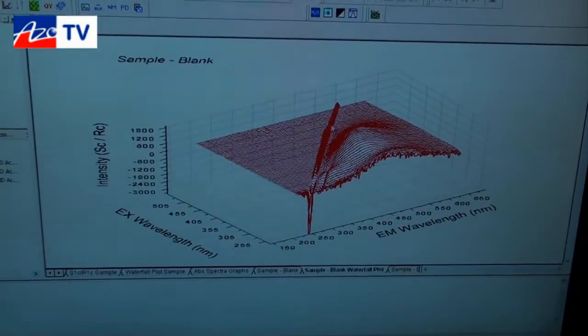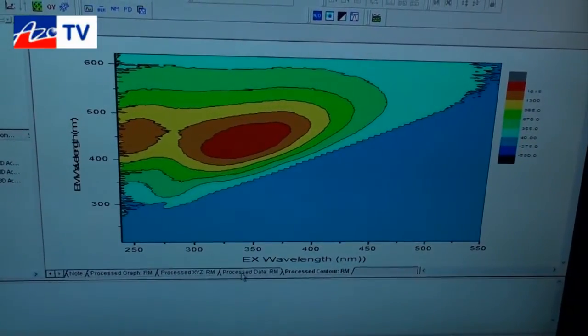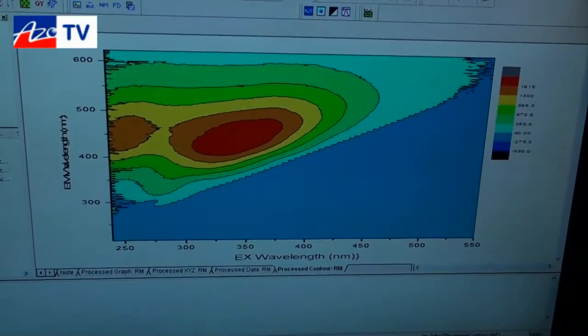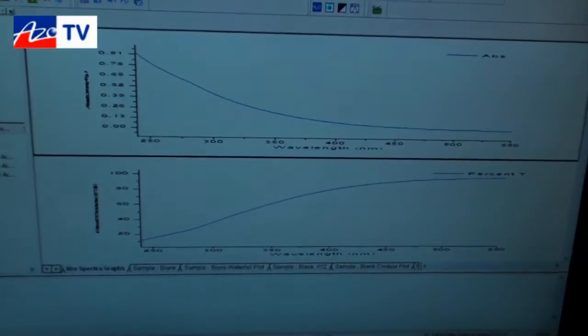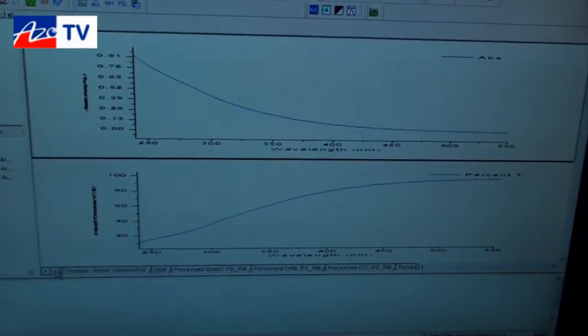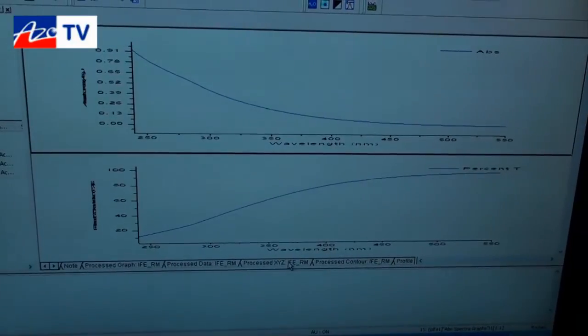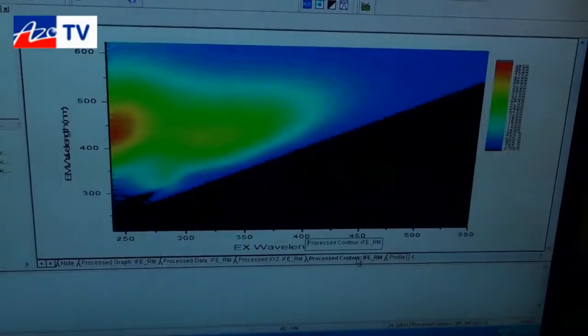So this is a raw picture of the unprocessed data, then I'll walk you through some of the processing steps that we can apply. One of the processing steps involves the inner filter effect correction, and the inner filter effect correction can be followed by removal of the overlap band for the excitation and the emission.